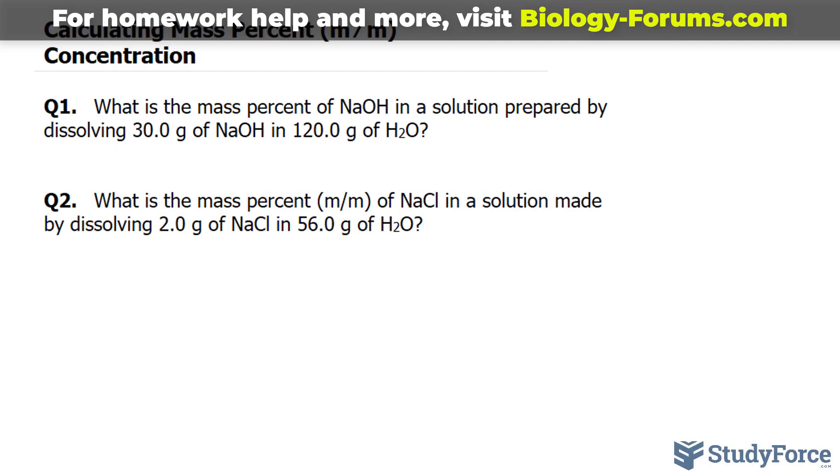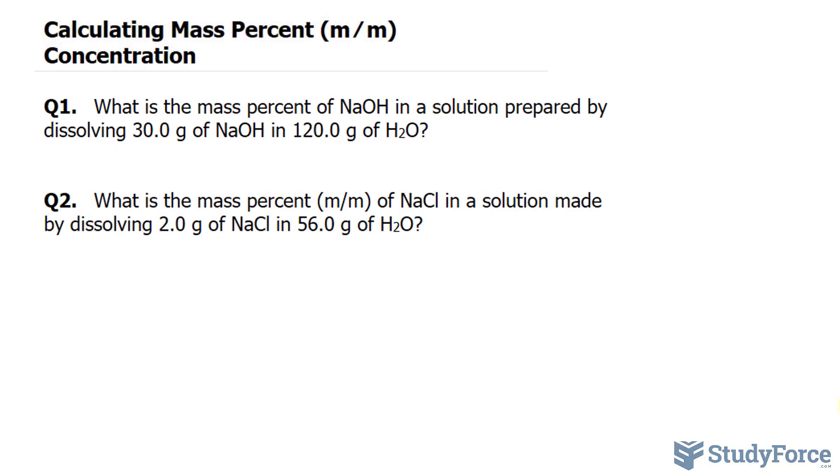To calculate mass percent, you have to first combine all of the masses together. So we have 30.0 grams and 120.0 grams. Let's add those up, and remember significant figures are important here. 30.0 plus 120.0, adding these up, we should end up with 150.0.